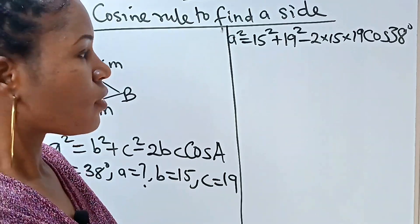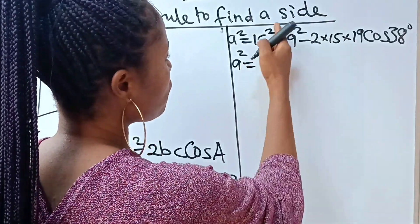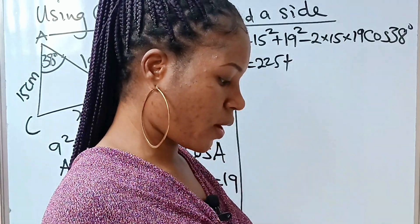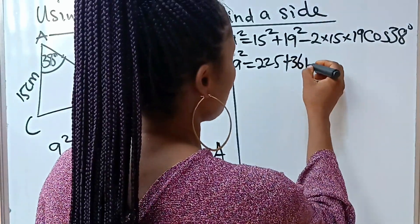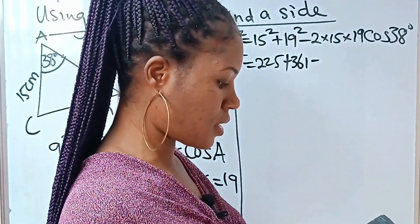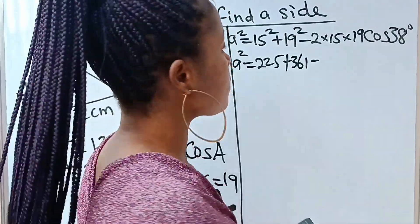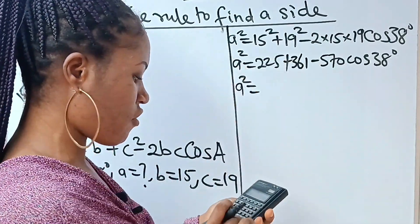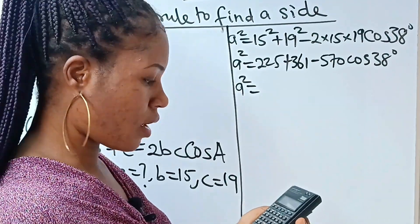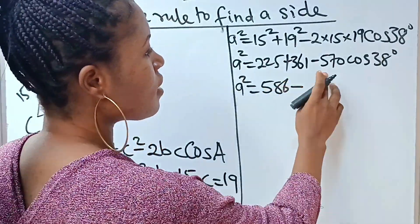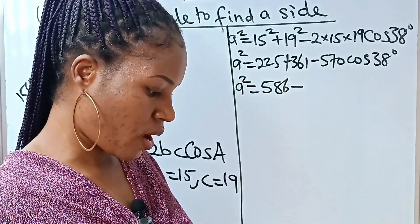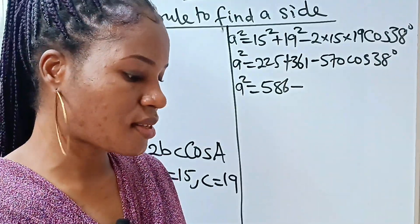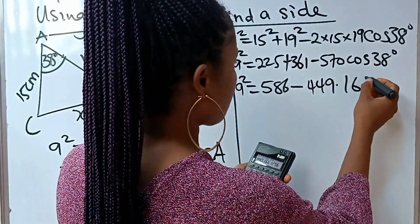Now let's solve. 15² = 225, and 19² = 361. Then 2 × 15 = 30, and 30 × 19 = 570. So we have: a² = 225 + 361 − 570·cos(38°). Computing 570·cos(38°) gives approximately 449.1661.